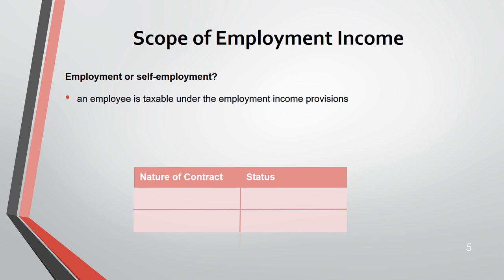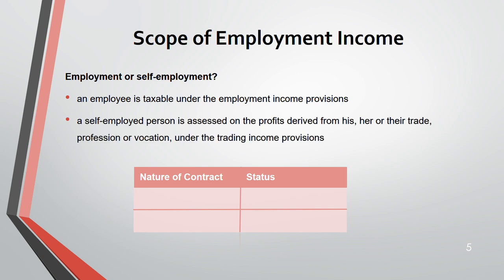If you are an employee, you will be taxable on your employment income. If you are self-employed, you will be taxed on your profit under trading income provisions — it becomes trading income, not employment income. The nature of the contract determines your status. If the contract is 'of service' — that is employment. If it is 'for services' — that is self-employment. Just changing one word changes your status, so in the exam you must identify which type of contract is present.